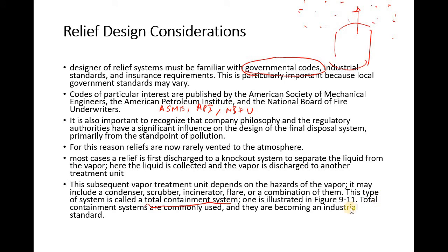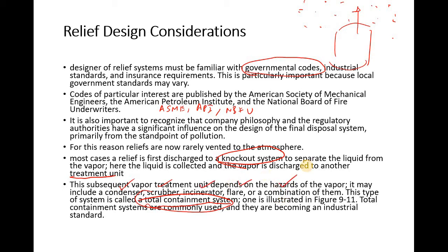One example is illustrated in Figure 9-11 - a relief contaminant system with a knockout drum that separates vapor from liquid. The designer must consider governmental codes from ASME, API, and NBFU, plus the company philosophy and regulatory authorities such as the environmental authority in Bahrain. After the knockout, a total contamination system using a condenser, scrubber, or combination treats the relieved material.